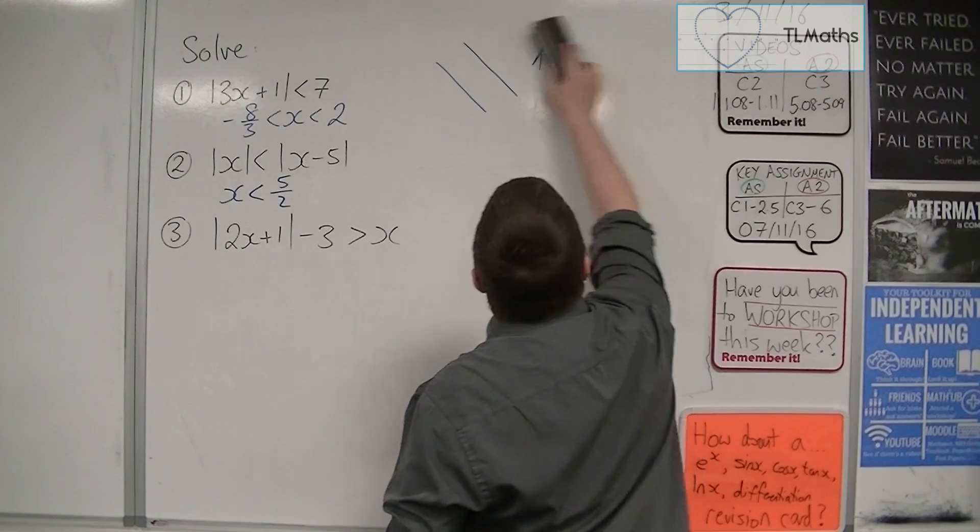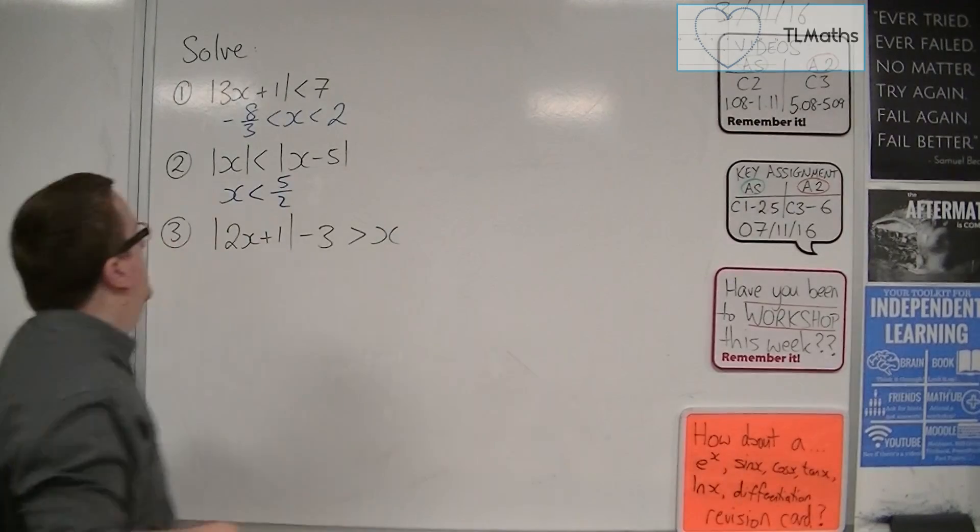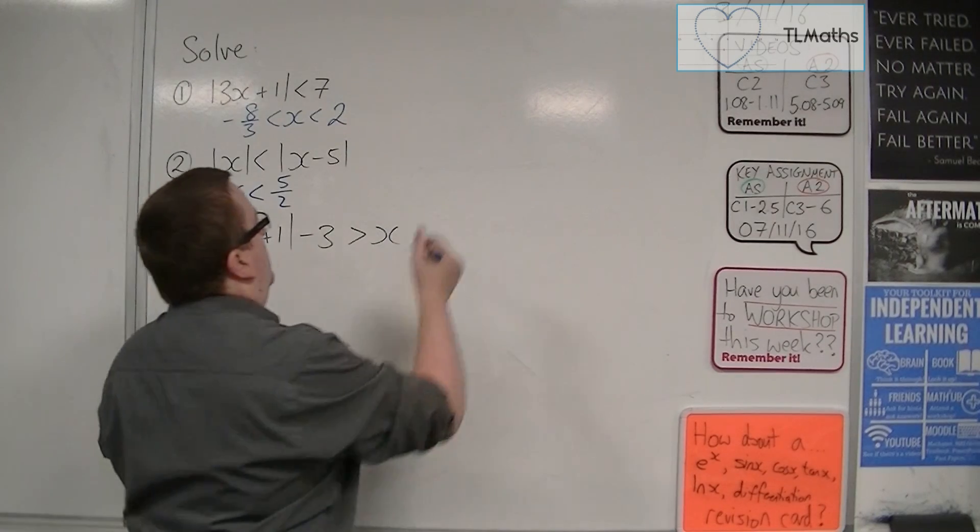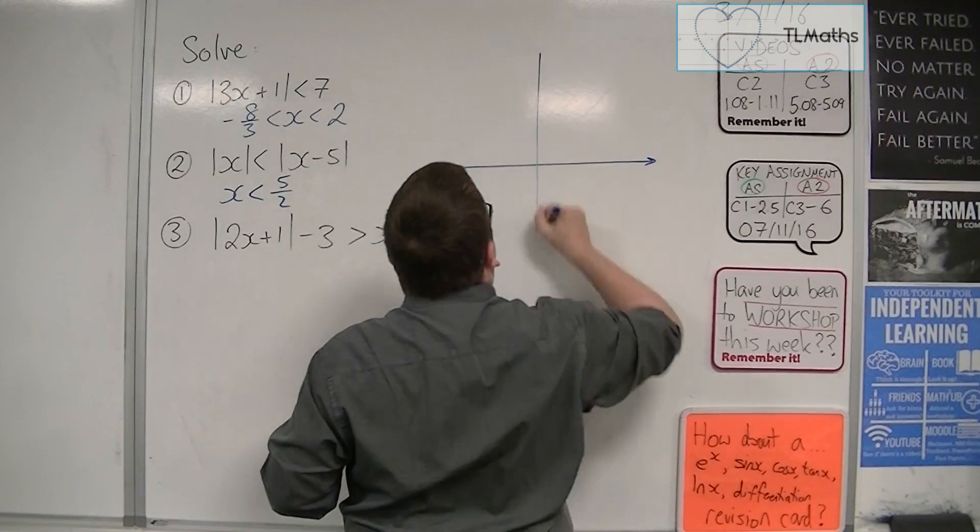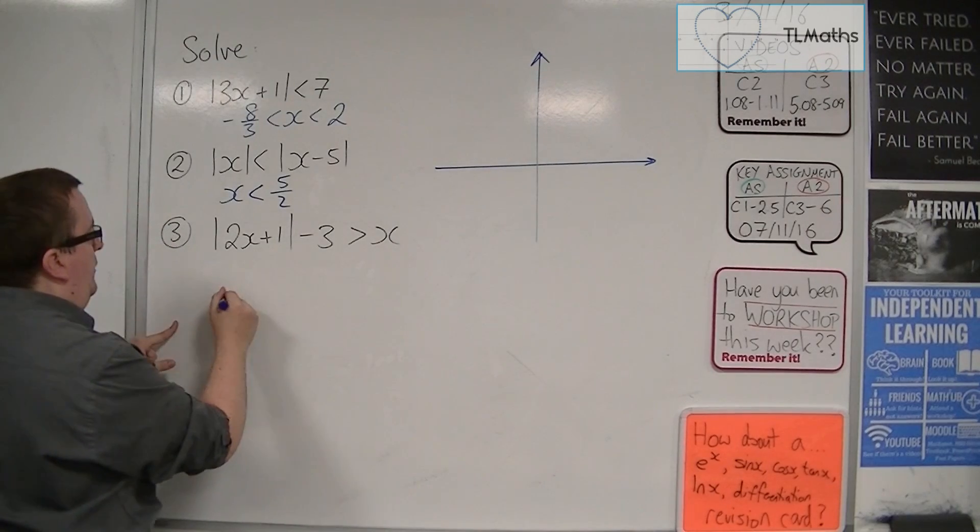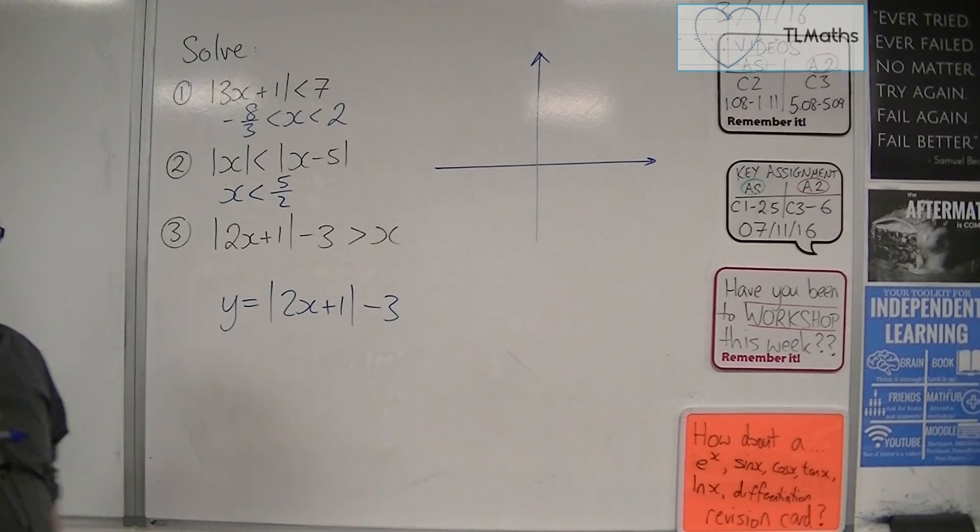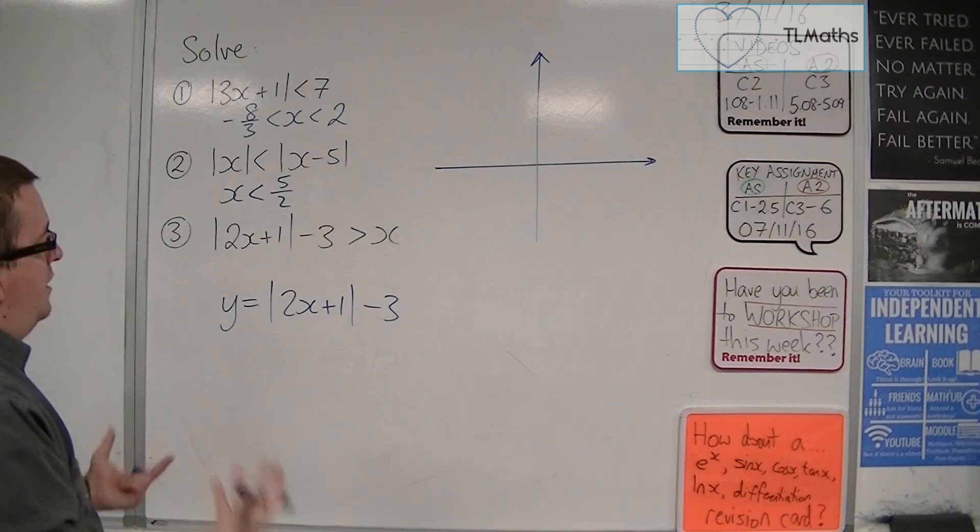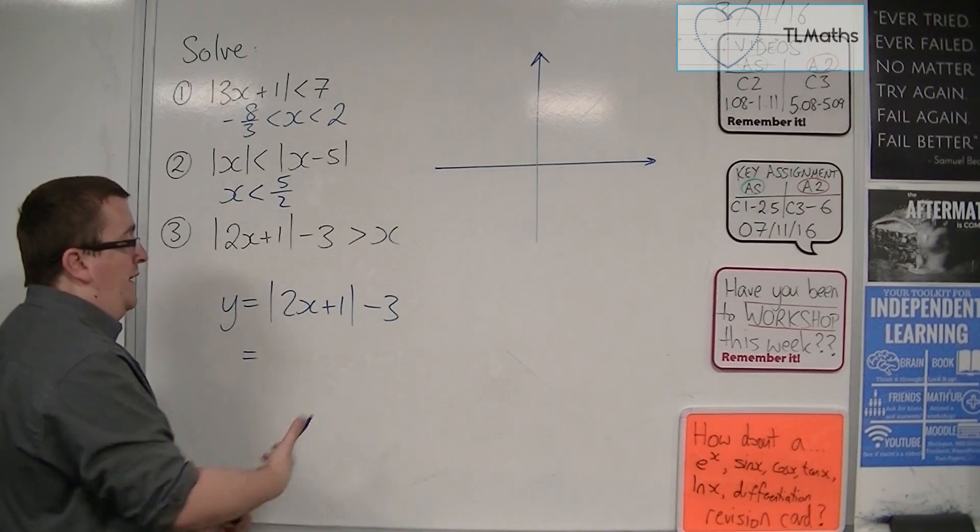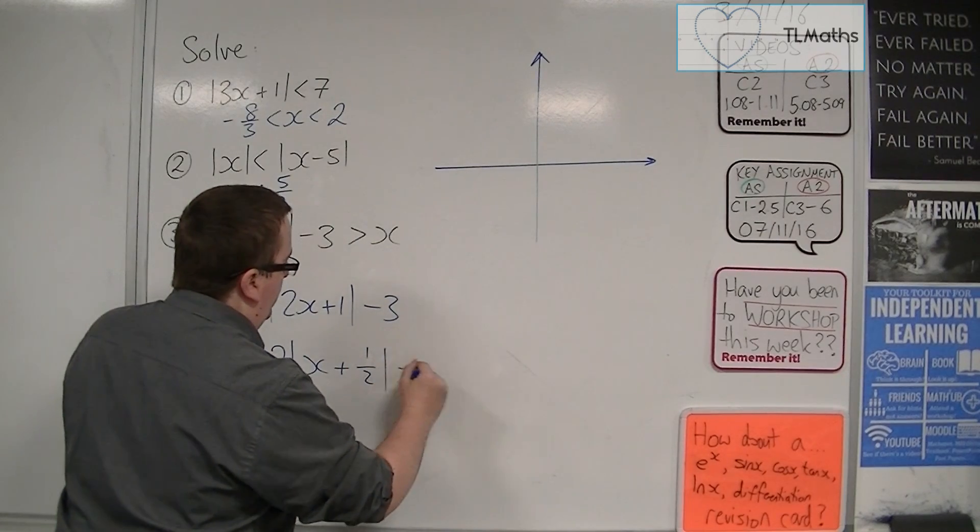Right, now for the third one. We've got mod of 2x plus 1, take away 3, is greater than x. So first things first. I need to sketch y equals modulus 2x plus 1, take away 3. Now, in its current format like that, it's a bit nasty to work with. Because of that 2 in there, I don't particularly want that 2 in there. So I'm going to factor it out, much like you would a bracket. And I'd have to have 1 half inside.